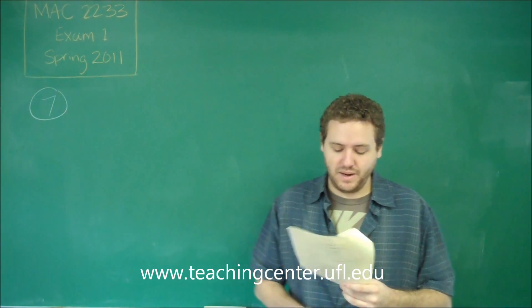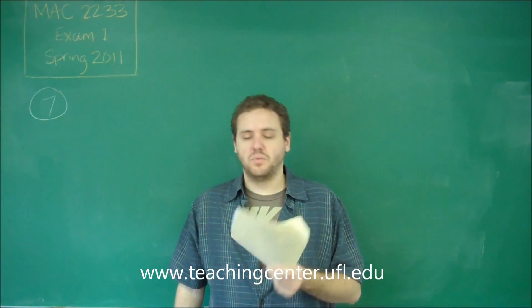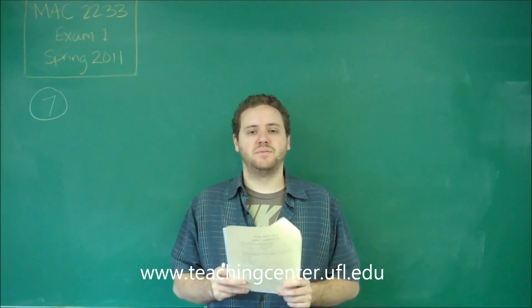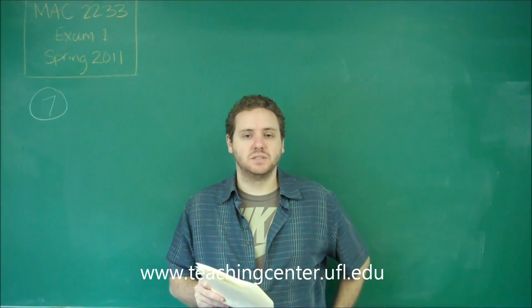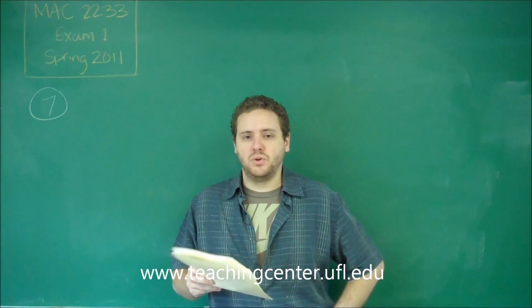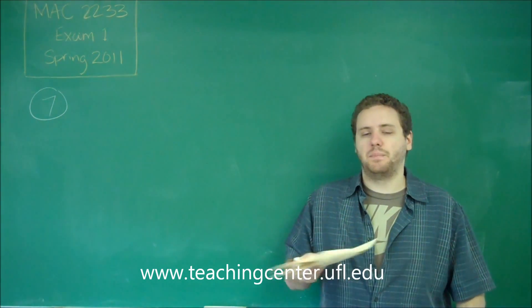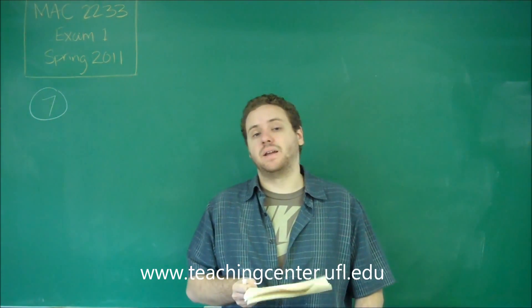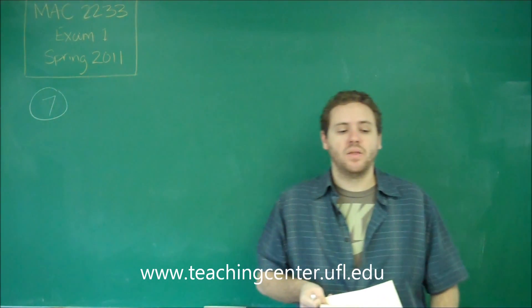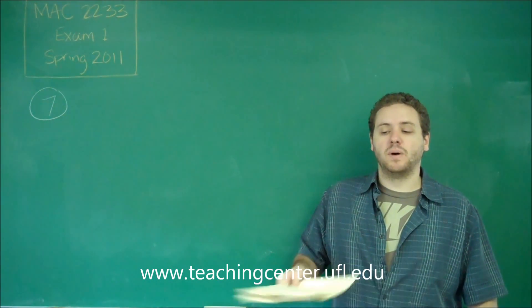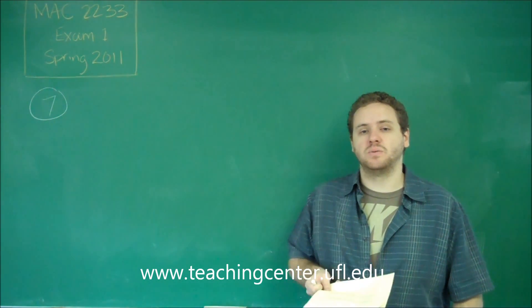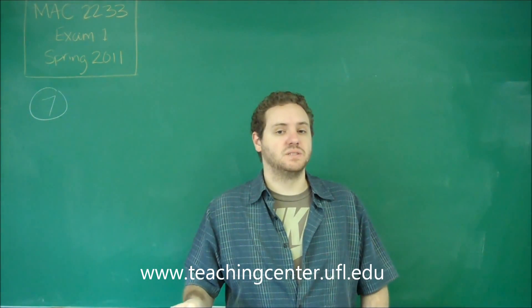Alright, so for number seven, we have an intermediate value theorem problem. Remember that the intermediate value theorem states that if you have a continuous function, if you can plug in two separate values for the function and you get a positive and negative answer specifically, then there must have been somewhere in between those two x's that would have given you an answer of zero.